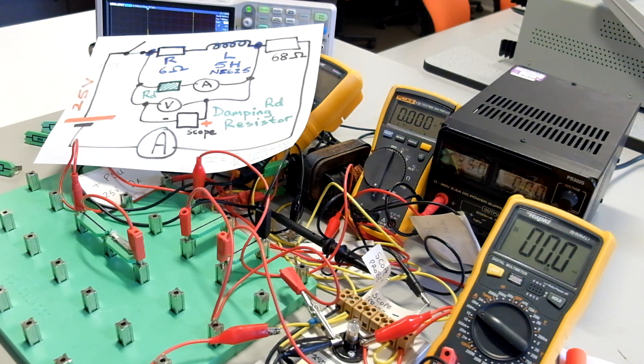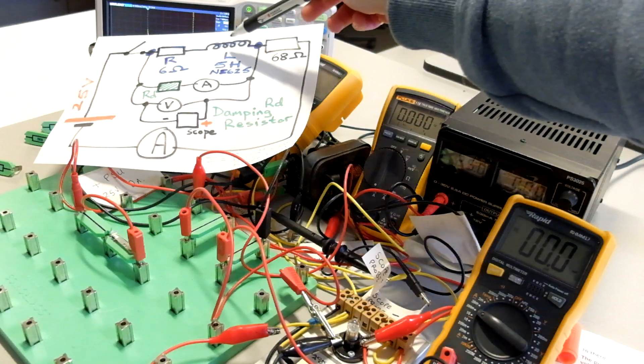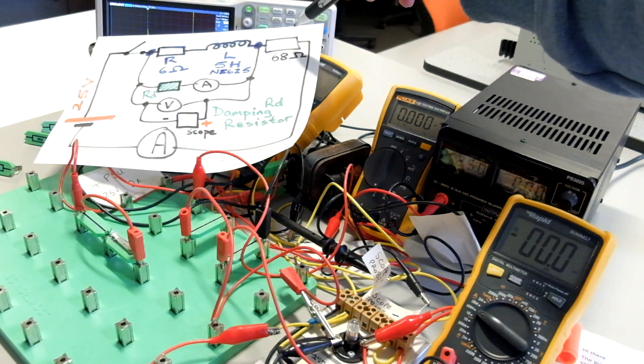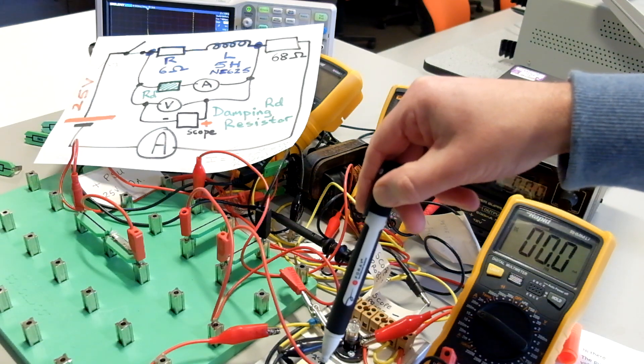So when current switches on, the coil tries to hold the current down. It's a delay action to reaching steady state current defined by Ohm's law, which will be the 25 volts divided by our circuit loop through the 68 ohm external resistor here to limit the current.